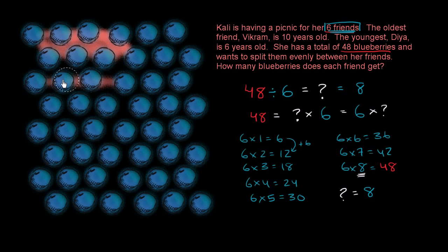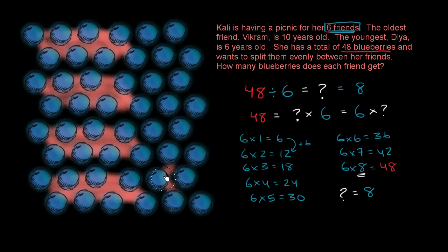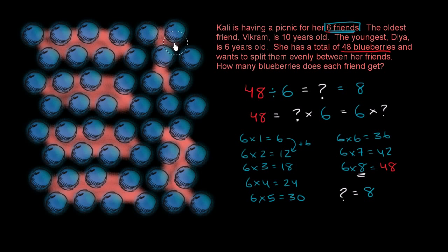Here's another group of eight blueberries right over here. Here's another group of eight blueberries. And then here's our fourth group of eight blueberries. We can make a fifth group of eight blueberries. And finally, here is our sixth group of eight blueberries. So notice, we have six groups of eight blueberries, and each of her six friends could take one of these groups.